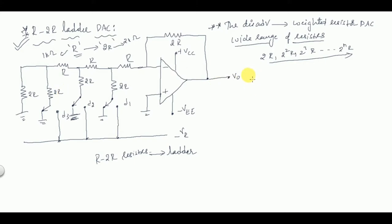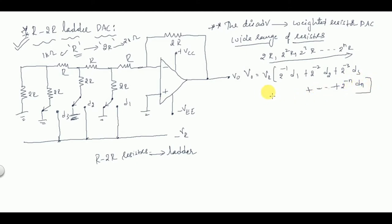The output voltage expression is the same for both types of DAC: V0 = Vr × (2⁻¹·D1 + 2⁻²·D2 + 2⁻³·D3 + ... + 2⁻ᴺ·Dₙ). This output voltage expression does not change. The only advantage of R2R ladder DAC compared to weighted resistor DAC is that we are using only two types of resistors.